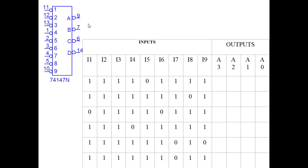This next chip is an encoder — the 74147 (or 74LS147). It converts a decimal number over to a BCD binary number. You'll notice all the inputs, one through nine, have bubbles on them — those bubbles mean an inversion, so these are active low inputs: it takes a low to activate them. The outputs are also inverted when you produce your binary number, weighted as 1, 2, 4, and 8. So we look for the lows coming in.